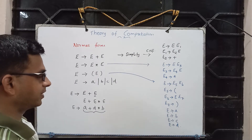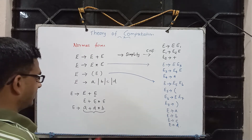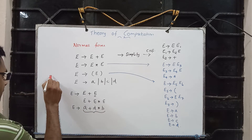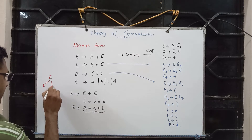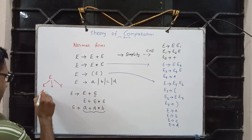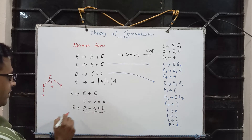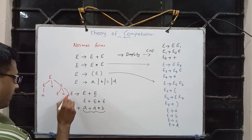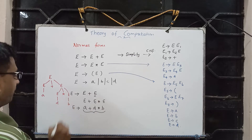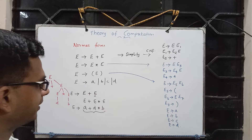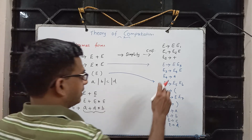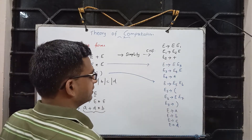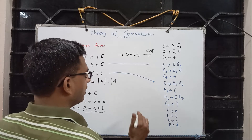There are a couple of interesting things to note as part of derivation trees. For example, for the expression A plus D star B, if you look at the derivation tree using the original grammar: E implies E plus E, for the left E we get A, for the right E we get E star E, for that we get D and B. So this is an arbitrary tree, but for the same expression derived using the CNF grammar we obtain a binary tree.